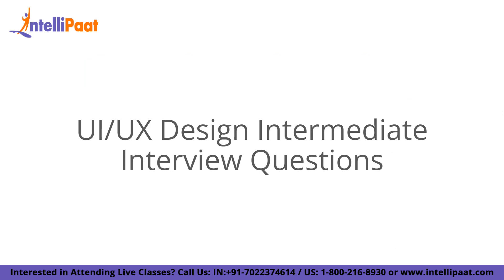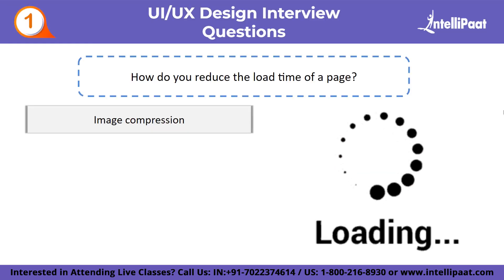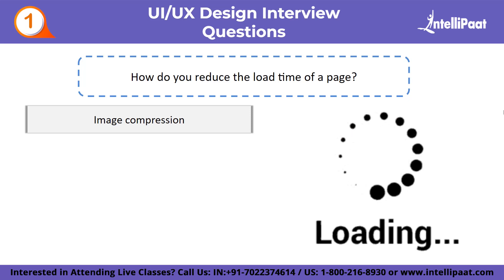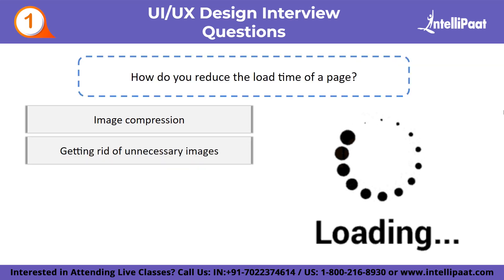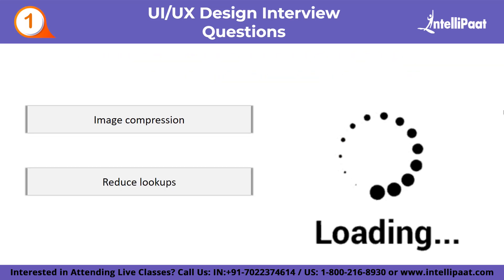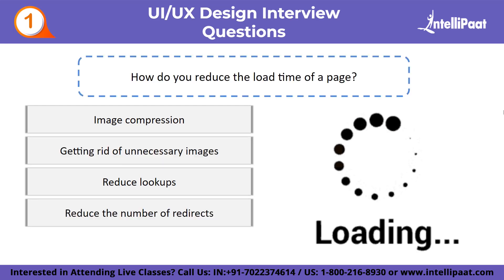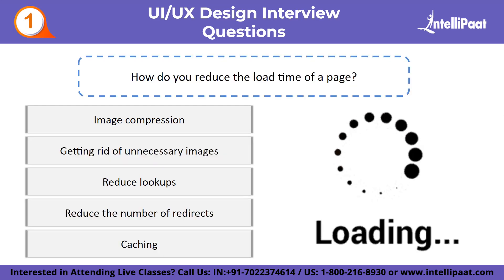Now let us look at intermediate interview questions. The first one: how do you reduce the load time of a page? You can shorten the page load time by doing the following: image compression, getting rid of unnecessary images, reducing lookups, reducing the number of redirects, and caching.